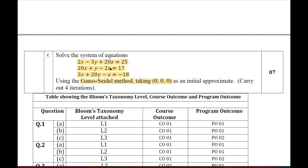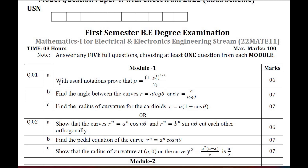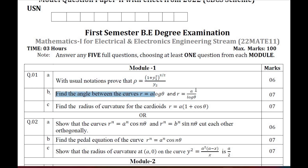This is what we have in Question Paper 1. We shall now move on to Model Question Paper 2, which is effective from 2022. The subject code is 22MATE11 — only for the Electrical and Electronics stream. Question Number 1A: with usual notation, derive ρ = (1 + y₁²)^(3/2) / y₂ — the radius of curvature in Cartesian form. Question 1B: find the angle between the two curves r = a·log θ and r = a/log θ.